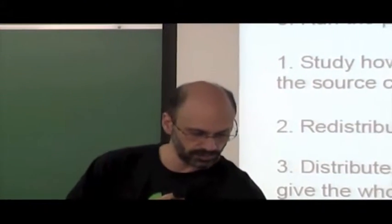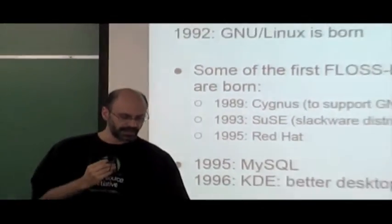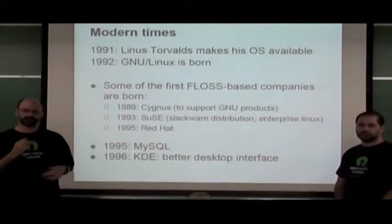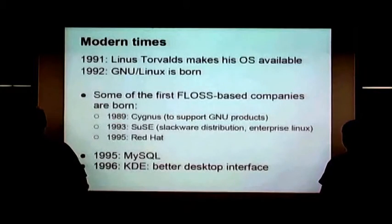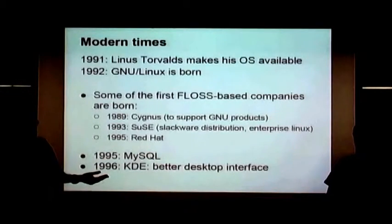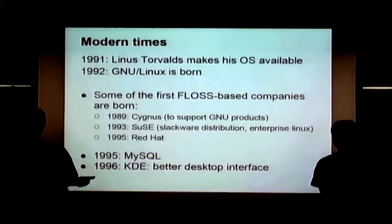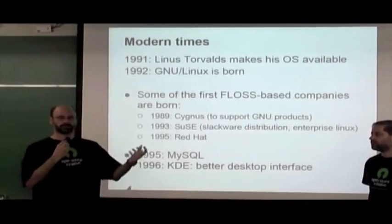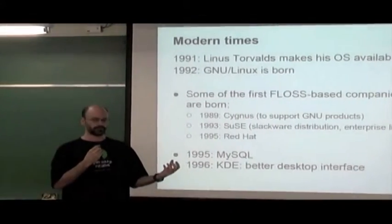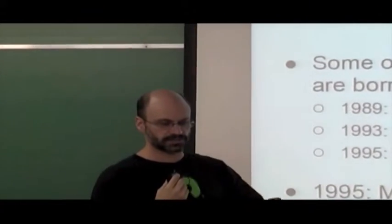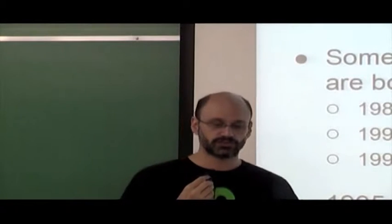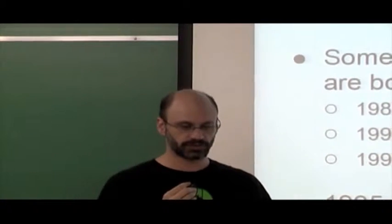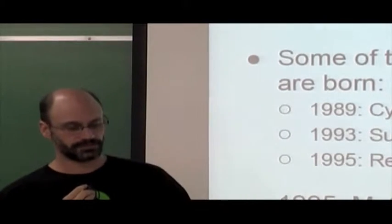This idea gained a lot of momentum. In 1991, Linus Torvalds developed his operating system and made it available on the web. In 1992, the GNU/Linux operating system was born by combining the Linux kernel with the GNU project tools. Around that time, the first open source-based companies started to appear — like Cygnus in 1989 to support GNU products, and SUSE and Red Hat in 1993 and 1995.